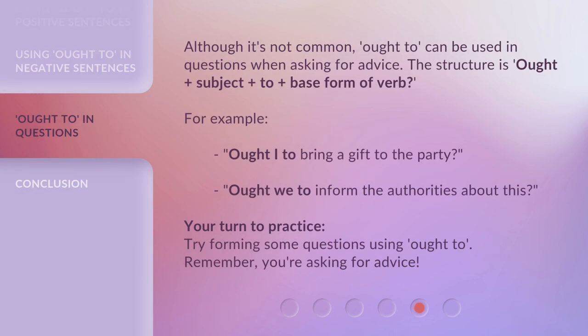Although it's not common, ought to can be used in questions when asking for advice. The structure is: ought plus subject plus to plus base form of verb. For example: 'Ought I to bring a gift to the party?' 'Ought we to inform the authorities about this?' Your turn to practice. Try forming some questions using ought to. Remember, you're asking for advice.